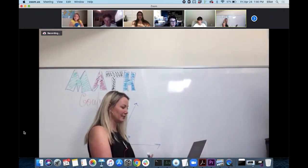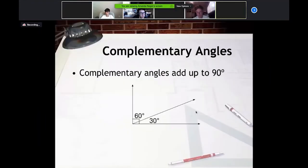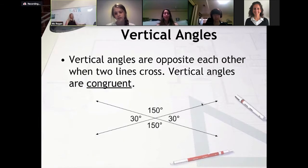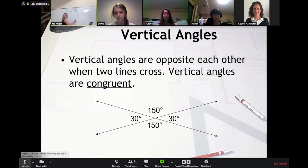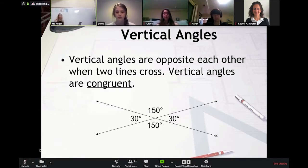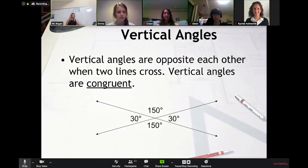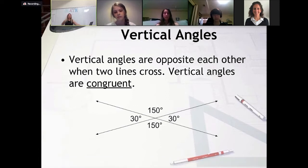Our next angle type is vertical angles. Does anyone want to read that definition? 'Vertical angles are opposite each other when two lines cross. Vertical angles are congruent.' That's right, thank you.